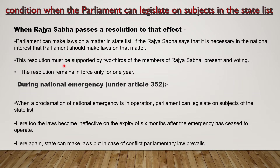This resolution must be supported by two-thirds of the members of Rajya Sabha present and voting. The resolution remains in force only for one year. The second condition is during national emergency under Article 352 — when a proclamation of national emergency is in operation, Parliament can legislate on subjects of the State List. The laws become ineffective on the expiry of six months after the emergency has ceased to operate. States can make laws but in case of conflict, parliamentary laws prevail.